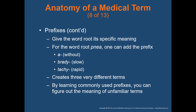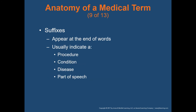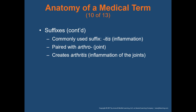By learning commonly used prefixes, you can figure out the meaning of unfamiliar terms. Suffixes appear at the end of a word and usually indicate a procedure, condition, disease, or part of speech. One of the most commonly used suffixes is -itis, meaning inflammation or infection. Pair that with the root word arthro, meaning joint, and that creates arthritis — an inflammation of the joints.